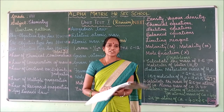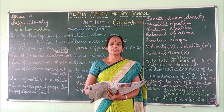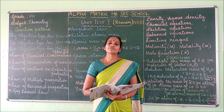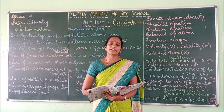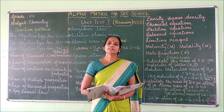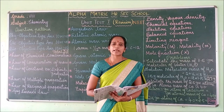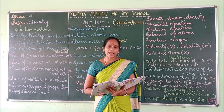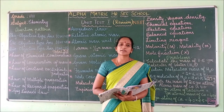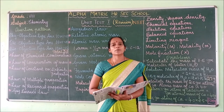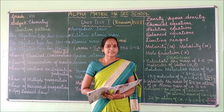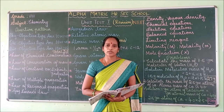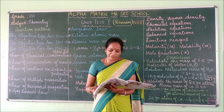Come to page number ten. In page number ten, gram atomic mass is given. If the atomic mass of an element is expressed in grams, then it is called gram atomic mass. Then, gram molecular mass: if the molecular mass of an element is expressed in grams, then it is called gram molecular mass. Read all the definitions.